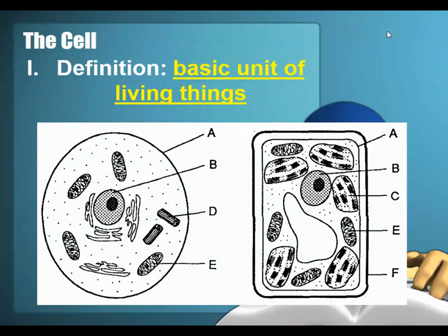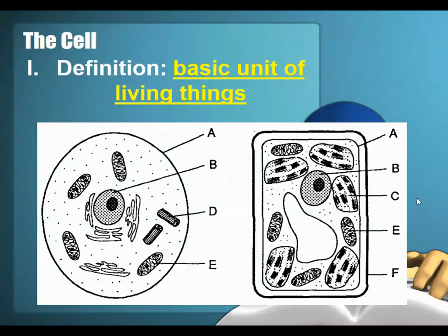On the cell on the left, our animal cell, structure A is the same as structure A on the right-hand plant cell — they're both pointing to the cell membrane. Structure B is the nucleus. Structure C is only found in plant cells, and this is pointing to a chloroplast. That's where photosynthesis occurs, and that's why we only find it in a plant cell.